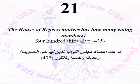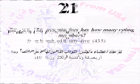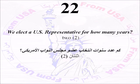Number Twenty-One: The House of Representatives has how many voting members? Four hundred thirty-five. Number Twenty-Two: We elect a U.S. representative for how many years? Two.